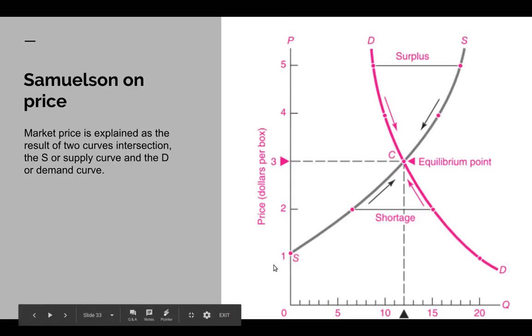And supposedly, there is this S curve, which is the supply, and the D curve comes from the consumers. And where the two meet, you get the actual quantity and price that will be supplied. That's the story we're told.